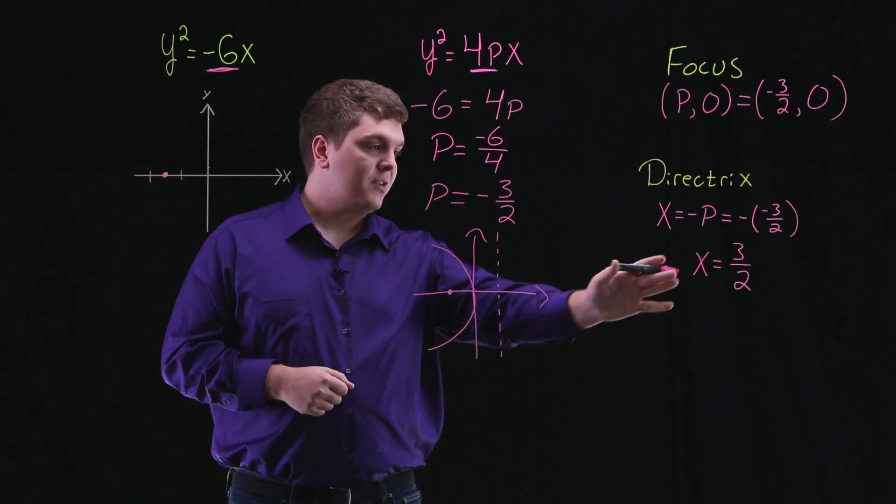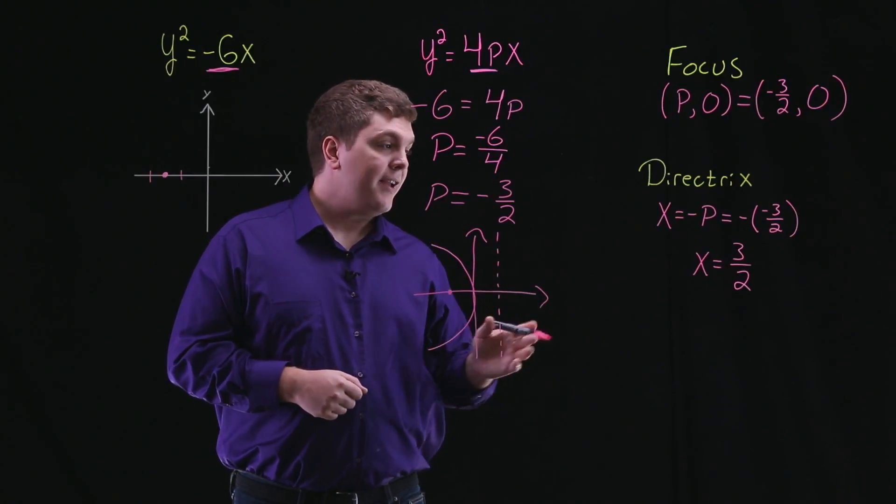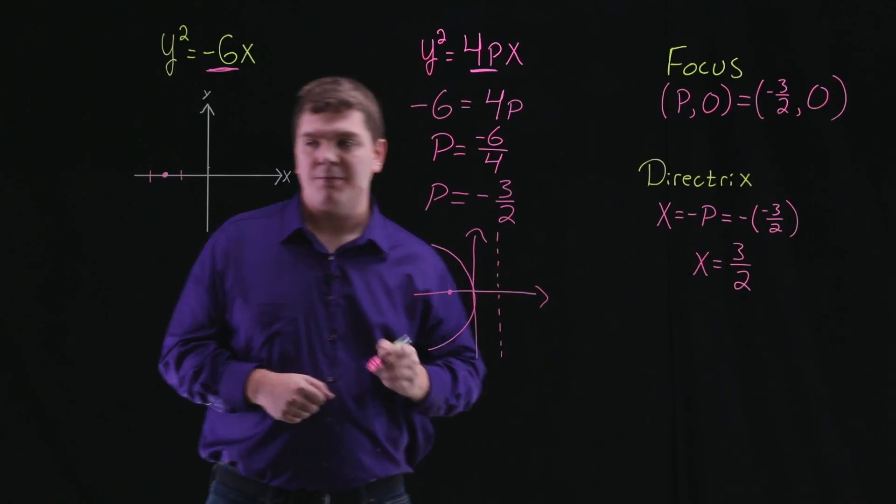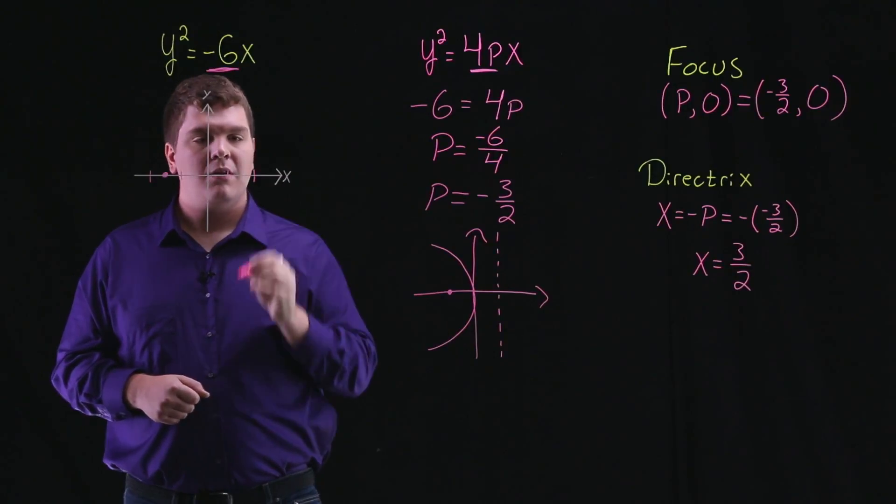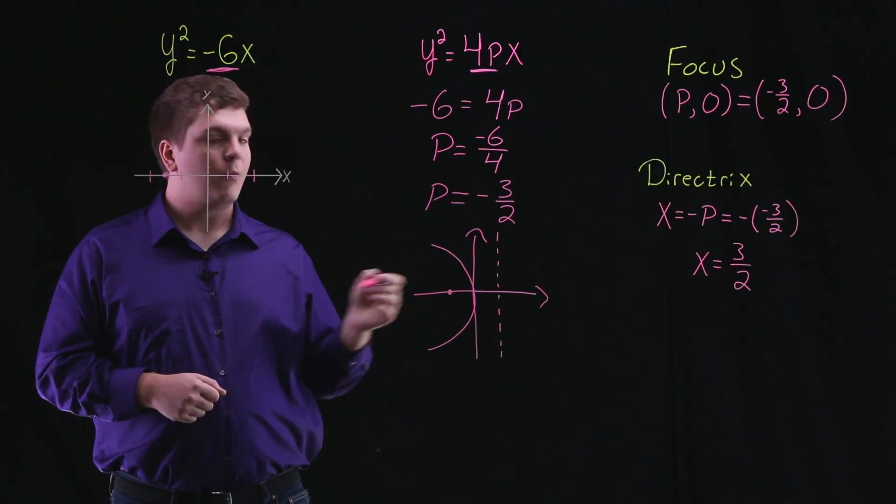We said our directrix was the line x = 3/2. So that's the line x = 1.5.